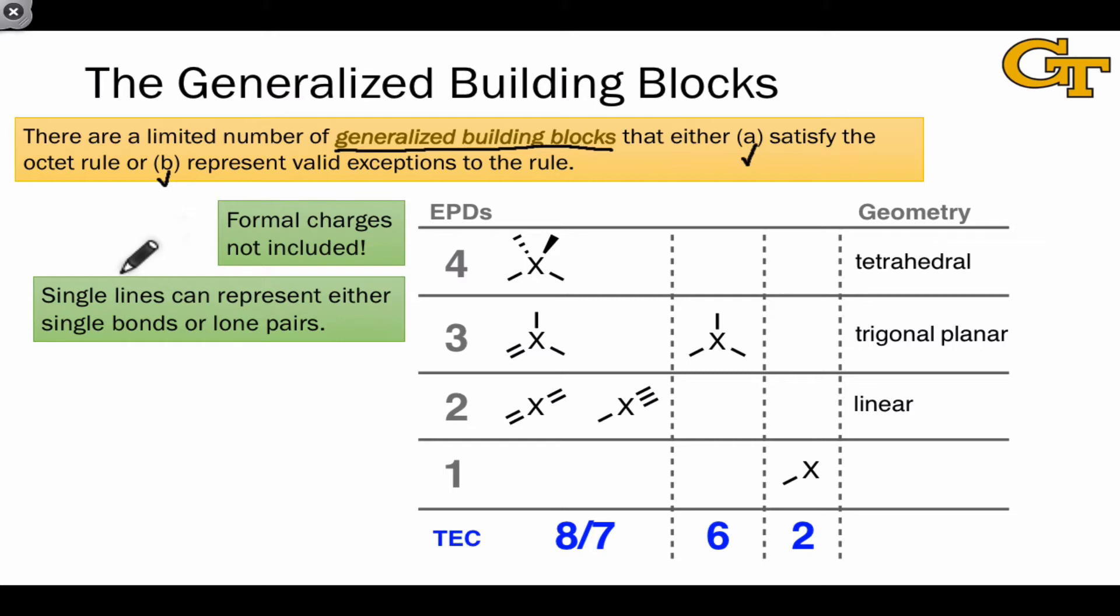Before going through these, it's important to note a couple of things about the way these are drawn. First, we haven't included formal charges, and the reason for that is we're leaving the central atom as a generic X atom. Depending on the identity of this X atom, the formal charge will vary, and we'll see that in the next video.